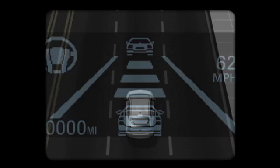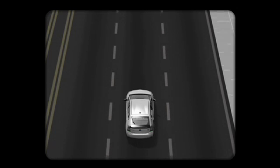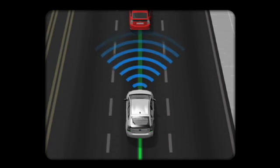The Lane Keep Assist system is activated by pressing the Lane Keep Assist button. Depending upon button position and vehicle speed, the system will modulate between the two functions.